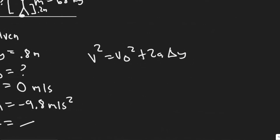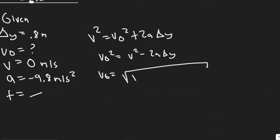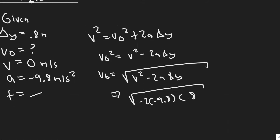Rearranging: V₀² = V² − 2a·Δy, so V₀ = √(V² − 2a·Δy). Plugging in: 0 squared is 0, so we have minus 2 times minus 9.8 times 0.8. The minus signs cancel, giving us √(2 × 9.8 × 0.8). The initial velocity is 3.96 meters per second. Keep in mind this is the velocity at the end of the crouch — what we're leaving the ground with.